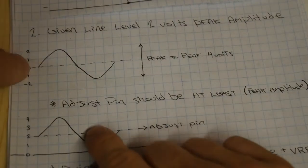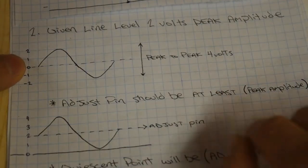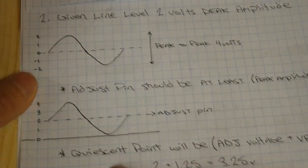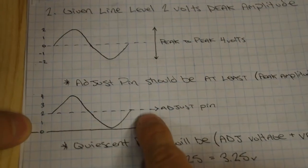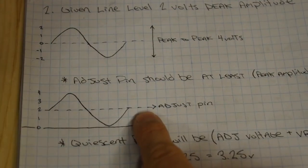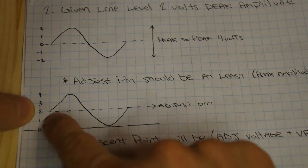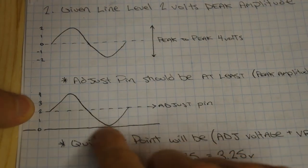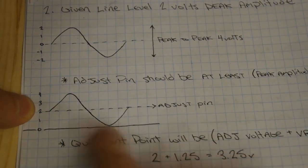So I want my adjust pin to be at least my peak amplitude, which in this case is two volts. So it would probably end up looking like this. If this is my adjust pin at two volts, if I set the pin at two volts, once I apply the signal to that pin, it won't drop below zero.